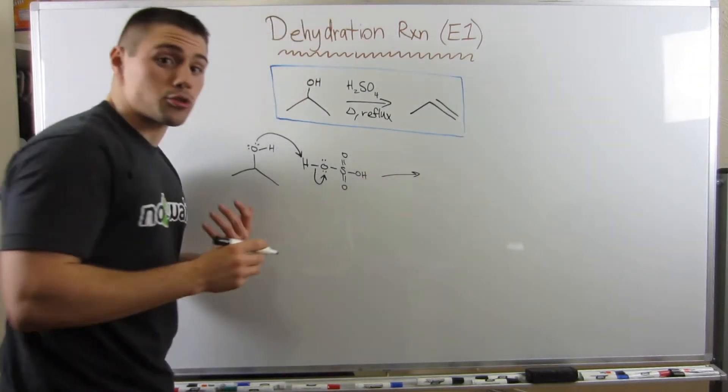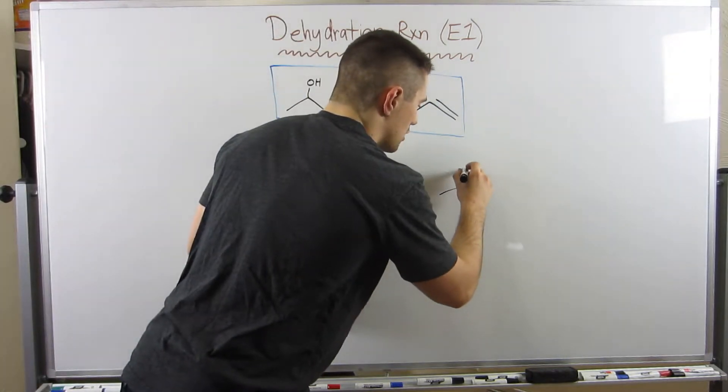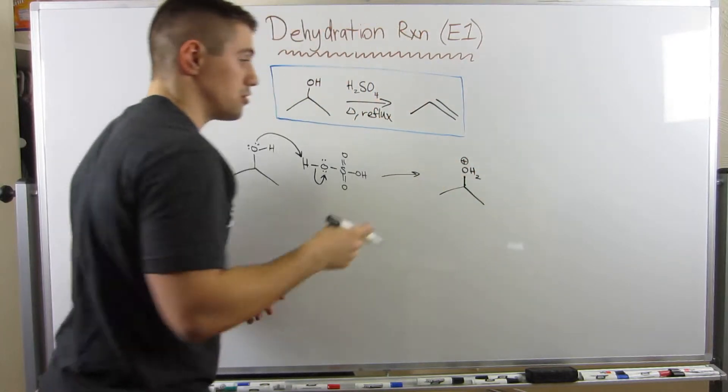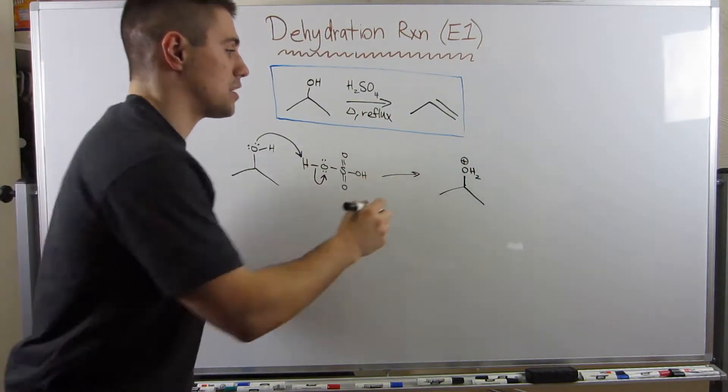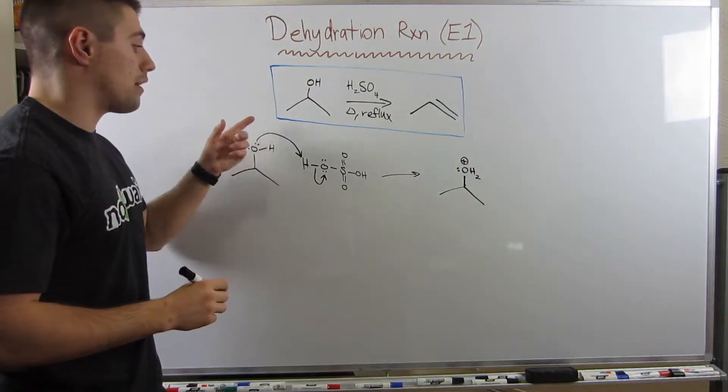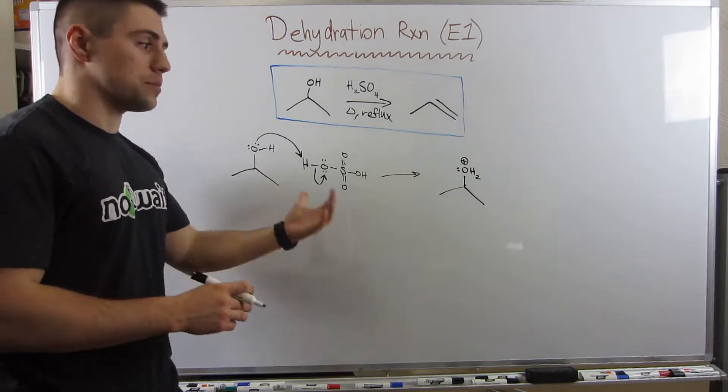I would highly recommend kind of knowing this off the top of your head. It comes up every once in a while. So this is the hydrogen, the H, the proton we're going to grab. This OH is going to take his two electrons, double headed arrow, grab H plus. Then we're going to dump these electrons off onto oxygen.